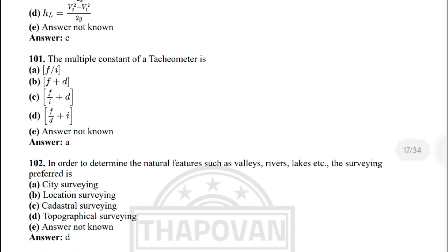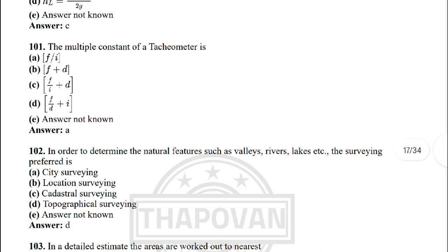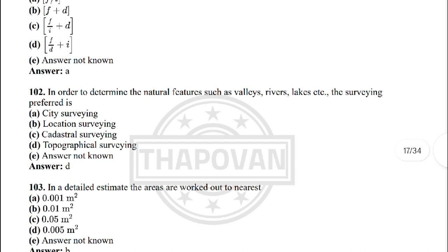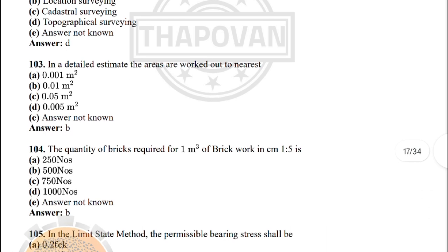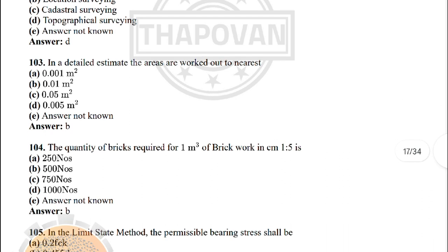Next: the multiplying constant of the tacheometer is — the correct answer is option A: f/i. Next: in order to determine natural features such as valleys, rivers and lakes, the surveying preferred is — option D: topographical survey. Next: in detailed estimate, areas are worked out to the nearest — the correct answer is option B: 0.01 m².